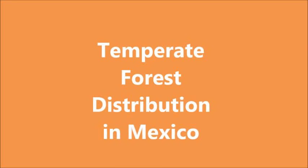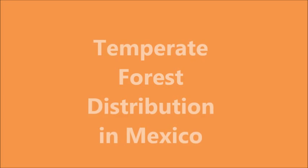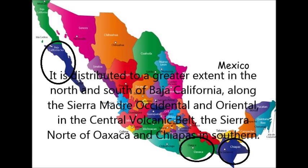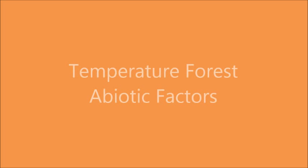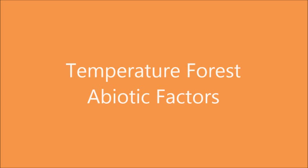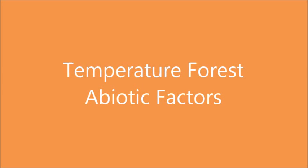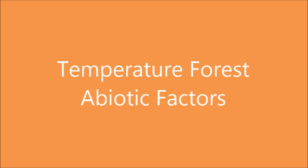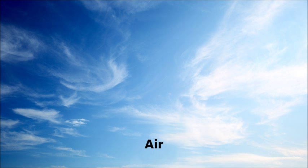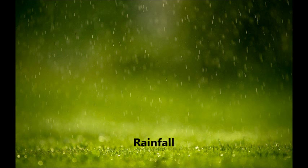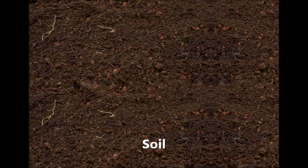Temperate Forest Distribution in Mexico. It is distributed at great extent in the north and south of Baja California, Norte de Baja California, and Chiapas. The Temperate Forest Abiotic Factors: air, rainfall, and soil.